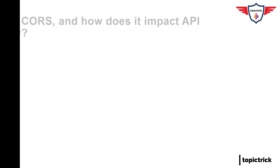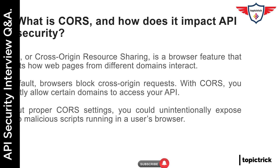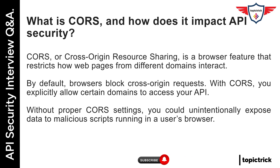What is CORS, and how does it impact API security? CORS, or cross-origin resource sharing, is a browser feature that restricts how web pages from different domains interact. By default, browsers block cross-origin requests. With CORS, you explicitly allow certain domains to access your API. Without proper CORS settings, you could unintentionally expose data to malicious scripts running in a user's browser.